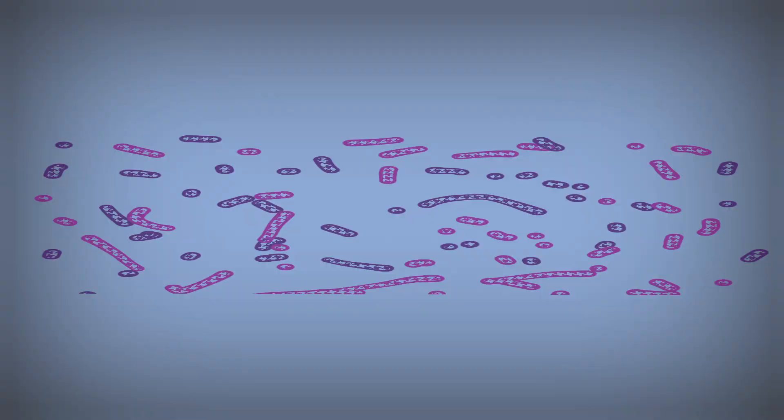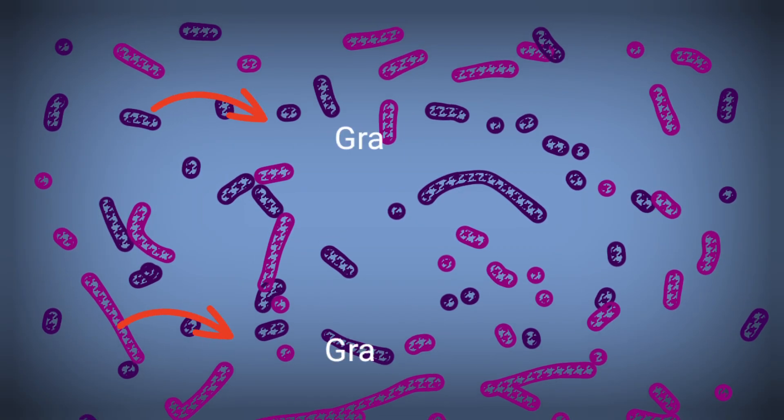Here, we can see the results. The pink-colored bacteria is Gram-negative, while violet one is Gram-positive.